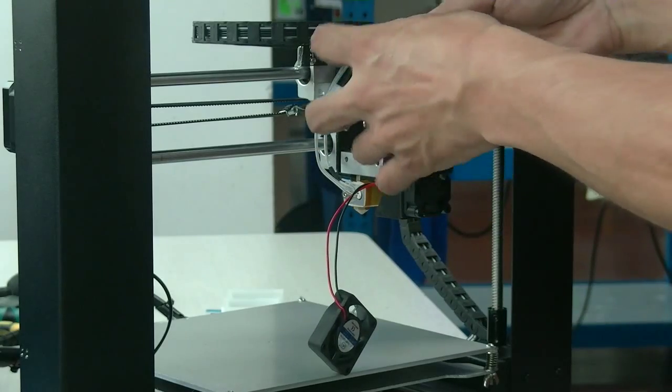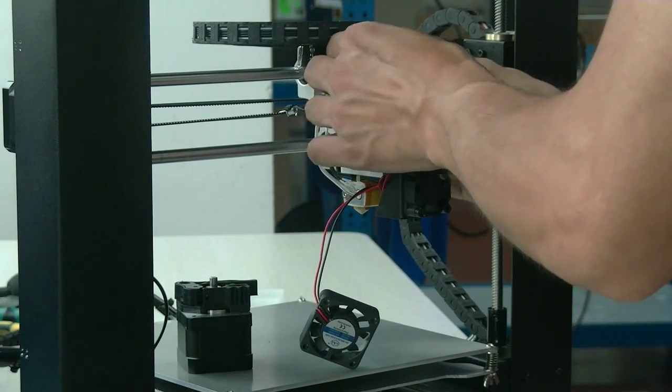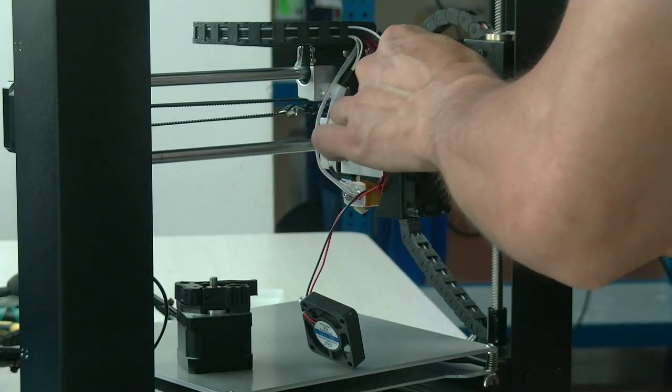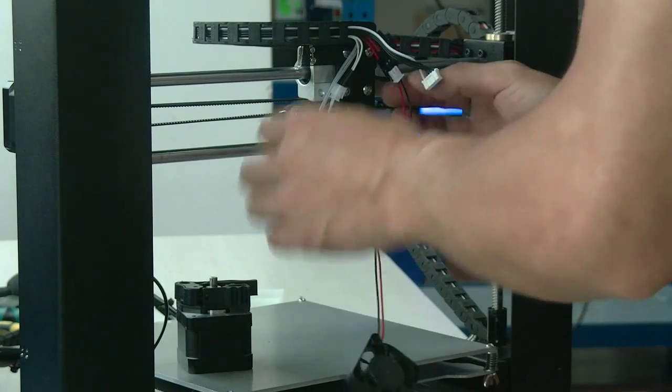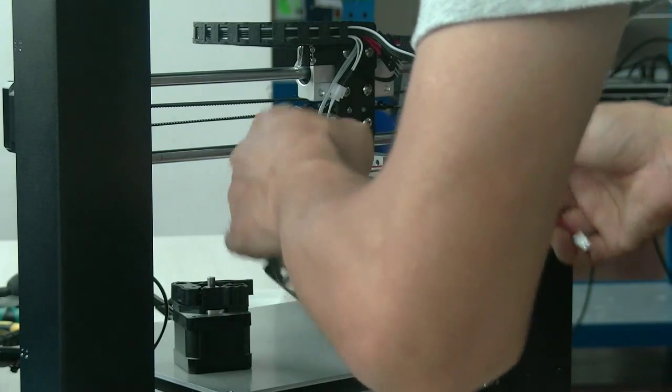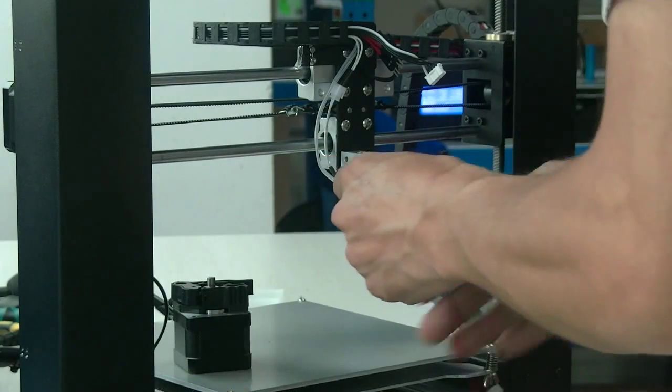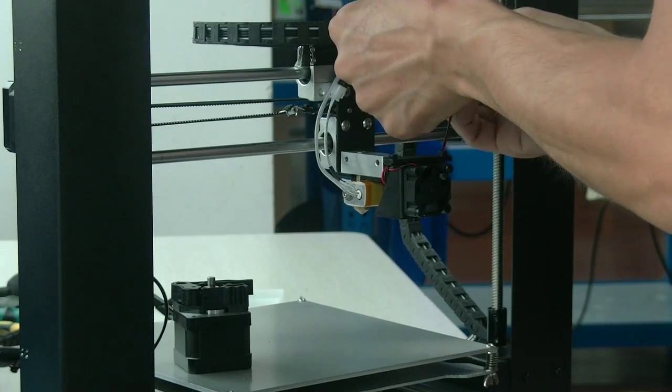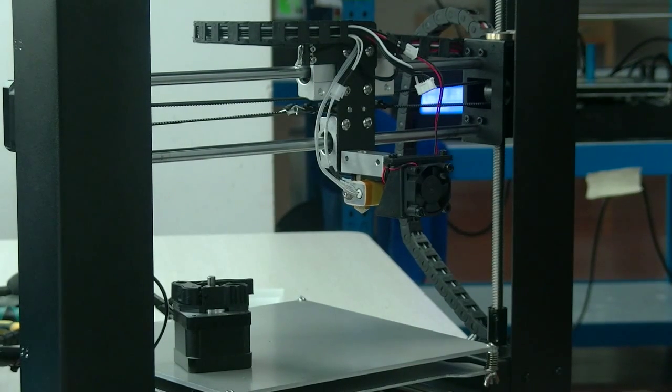Then for the same thing, you need to disassemble the cable of the 40 millimeter cooling fan. Because the filament cooling fan has twisted together with the extruder cooling fan. So we do it.